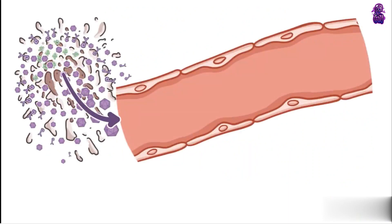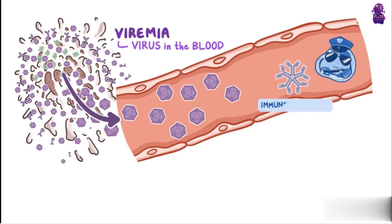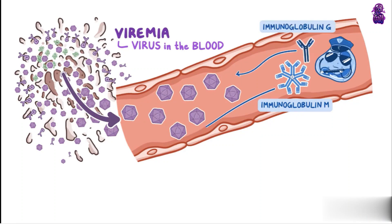When the cell dies, it bursts open, releasing copies of the virus into the blood — also called viremia. Our immune system detects the virus and starts producing specific immunoglobulin M and immunoglobulin G antibodies to fight the infection by forming immune complexes with the Parvovirus B19 antigen.